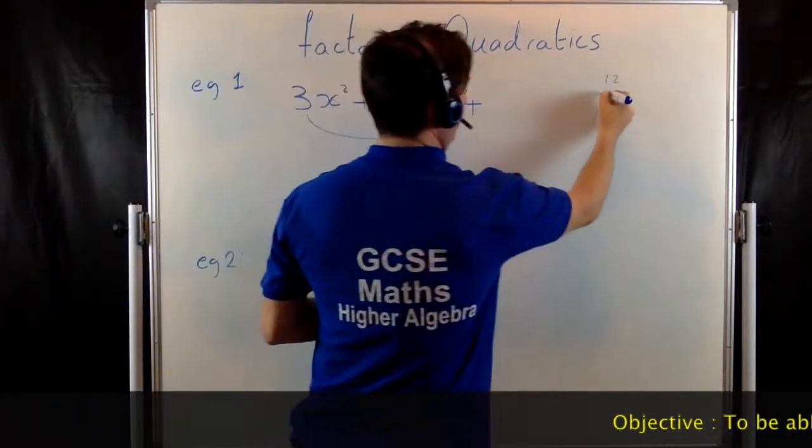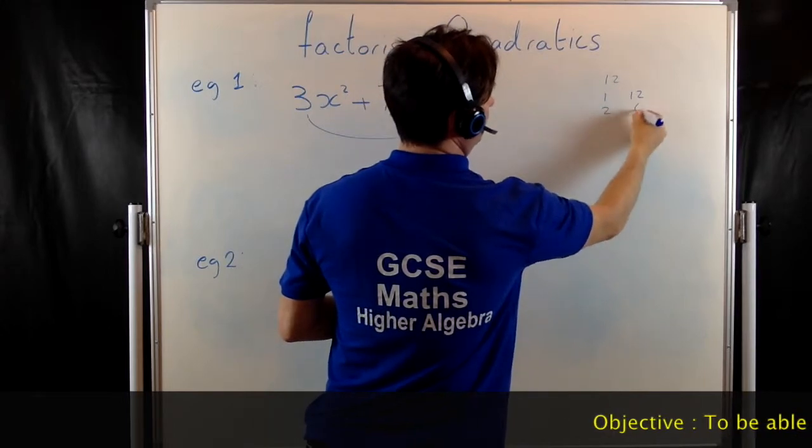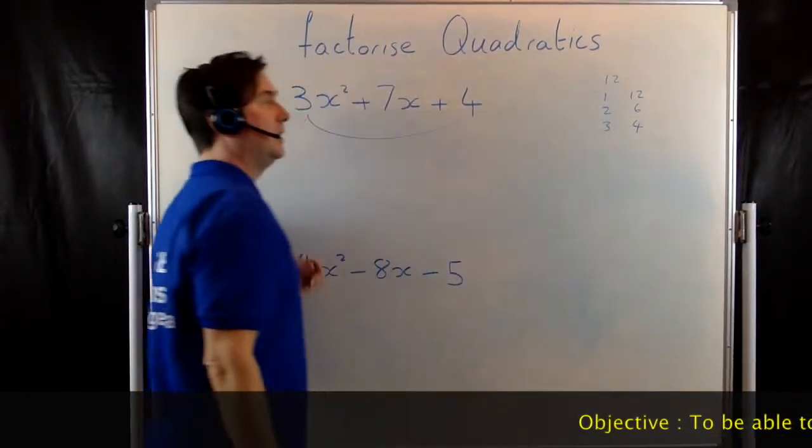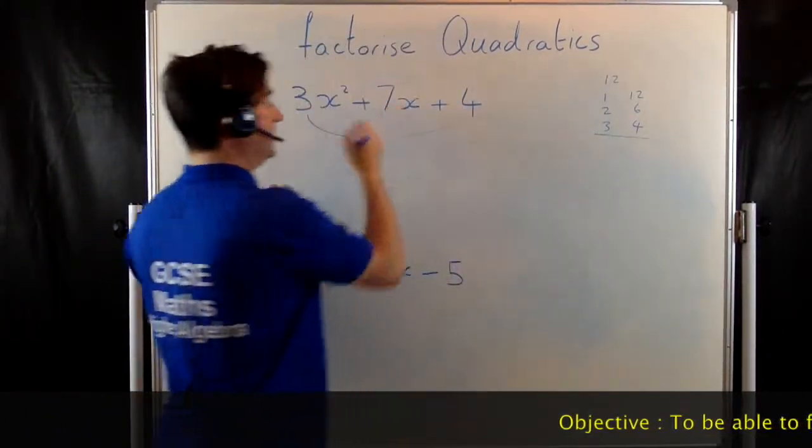So this time I could have 1 and 12, I could have 2 and 6, or I could have 3 and 4. Clearly it's going to be 3 and 4 that add to give you the 7.